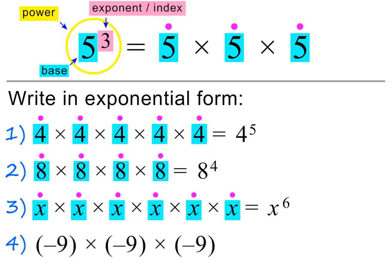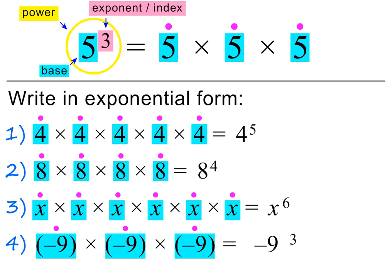In the next example, we are given negative numbers. Here minus 9 is being multiplied by itself 3 times, so this is minus 9 all to the power of 3. Here it is important that minus 9 is written inside brackets. Please pause to check.